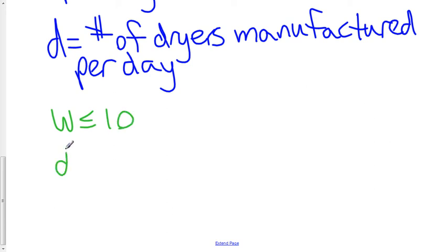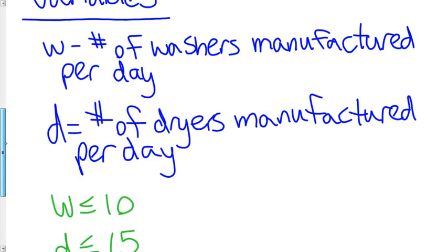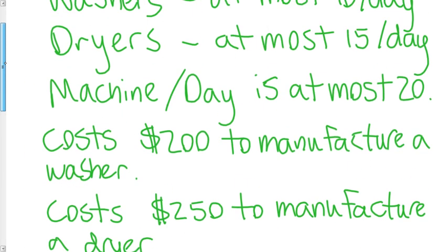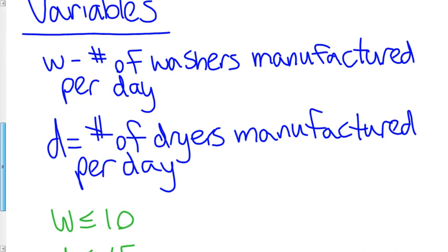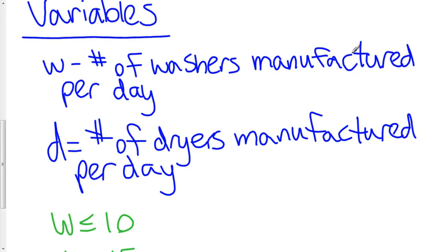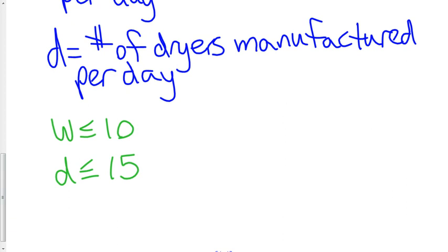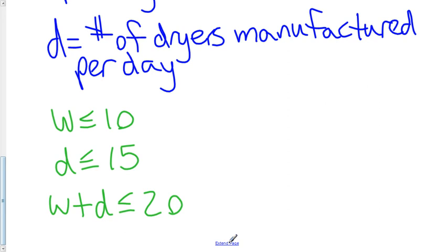Well, I know that W can be no greater than 10. I know that D can be no greater than 15. And why do I know that? Well, it says right here in our problem, in our specs given to us by the manufacturer, that the number of washers that can be manufactured per day is at most 10, dryers is at most 15. That's how we define the variables. W is the number of washers manufactured per day, D is the number of dryers manufactured per day. And then I also have the total W plus D, I can make no more than 20 machines a day. So there I've identified my constraints.